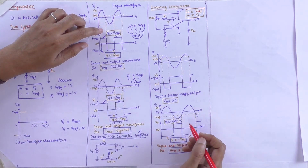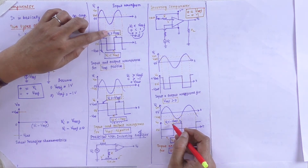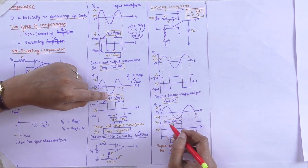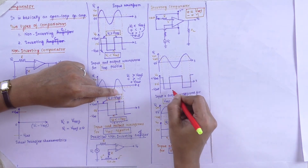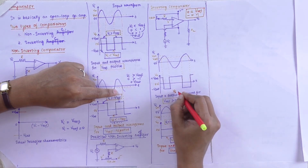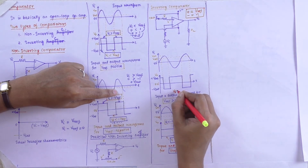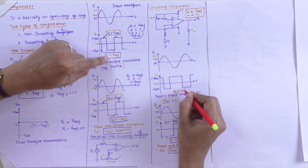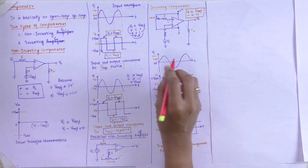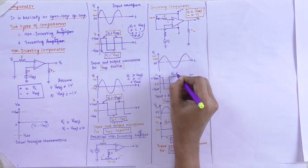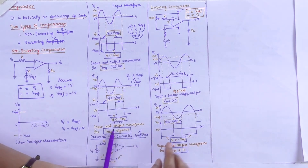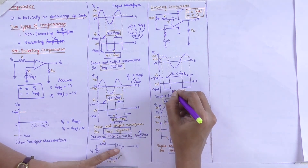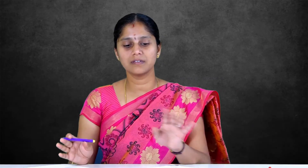VI is greater than V reference in one region and less than V reference in another region. These are the concepts behind the inverting and non-inverting comparator. For the inverting comparator, the inverting terminal is connected with the input voltage and the other terminal is given as reference voltage. For the non-inverting comparator, the non-inverting terminal is connected to the input voltage and the inverting terminal is connected to the reference voltage.